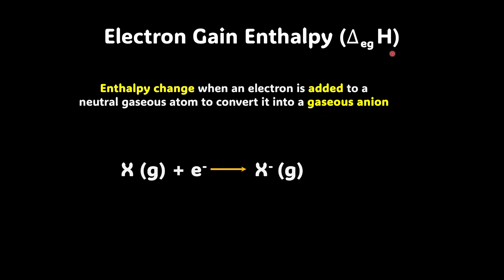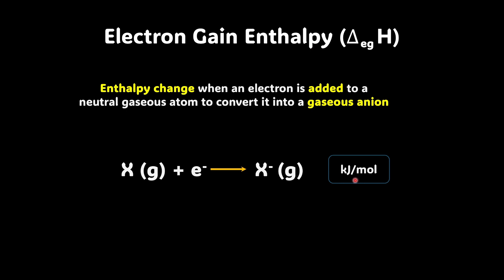EG stands for electron gain, H is for enthalpy, and the triangle represents delta, where delta represents change. So delta EGH is how we represent electron gain enthalpy. Just like any other enthalpy, the unit of electron gain enthalpy is also kilojoule per mole.